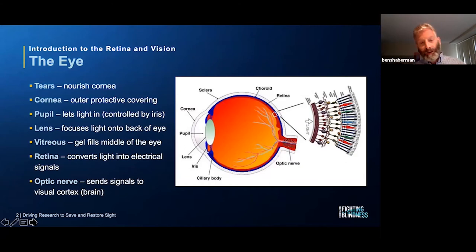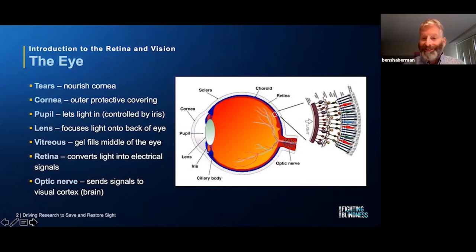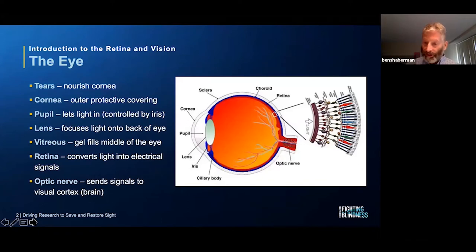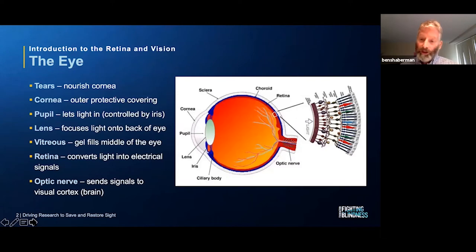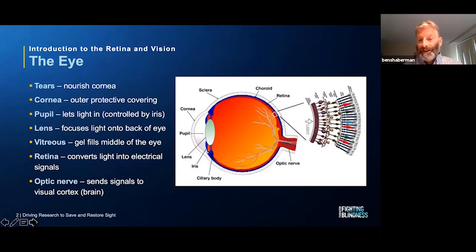Finally, after light goes through all these components and the vitreous, it hits the back of the eye — the retina. The retina's role is to take that light and convert it into electrical signals. That electrical information is then sent over the optic nerve, which is a very small cable that sends electronic information to the back of the brain — the visual cortex. Though it is a very small cable, the optic nerve has a million fibers, so there's a lot of visual information passed along from the retina to the back of the brain.